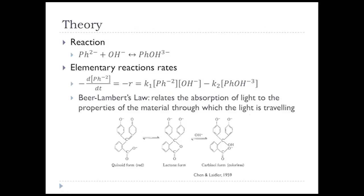We're going to use Beer-Lambert's Law to relate the absorbance of light to the properties of the material through which the light is traveling. We can measure absorbance and base our kinetic model off of this absorbance without converting back to concentration. The Ph2⁻ in the lactone form is red, and Ph3⁻ is colorless — so we're measuring the absorbance of the red lactone form and correlating that to concentrations for the reaction.